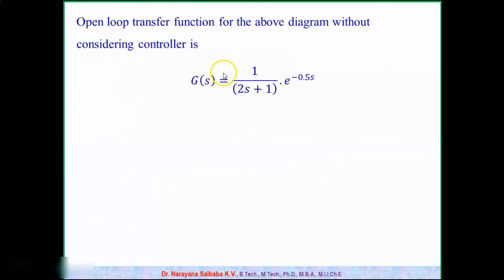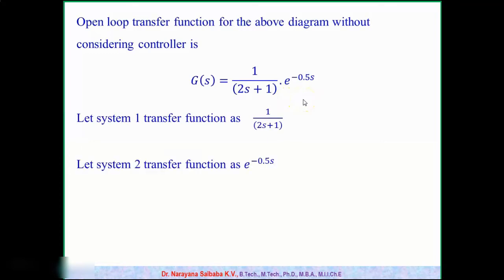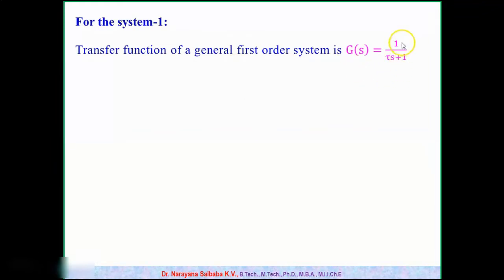We write the transfer function without considering the controller: G(s) = [1 / (2s + 1)] × e^(−0.5s). We split this into two parts: System 1 is 1/(2s + 1) and System 2 is e^(−0.5s). For these two systems separately, we calculate the AR values and phi values, then find the overall AR and overall phi for the given system.